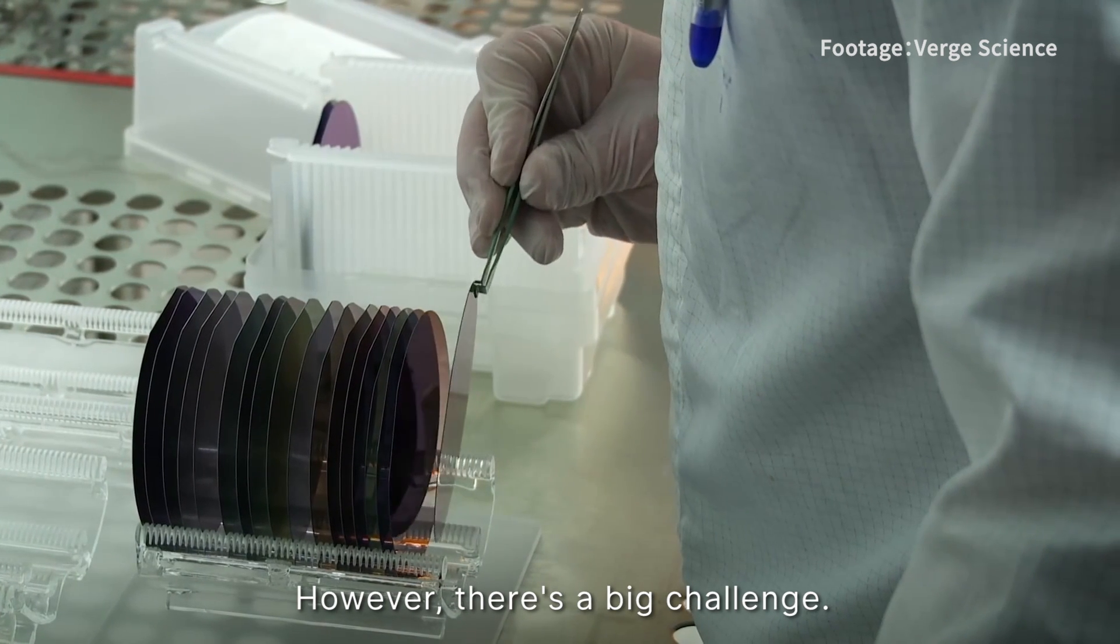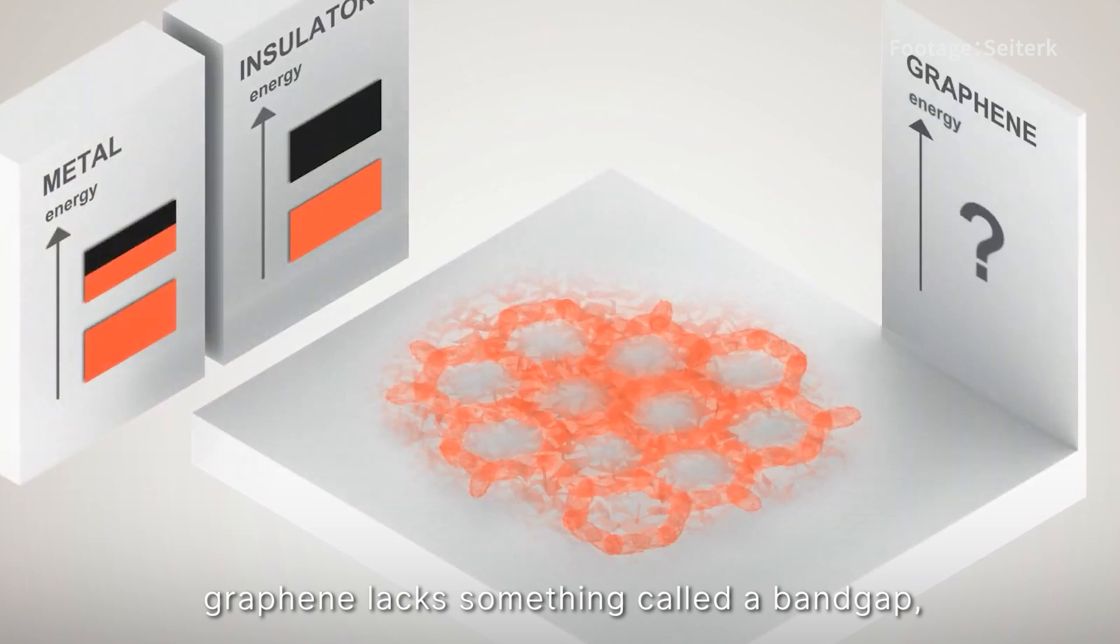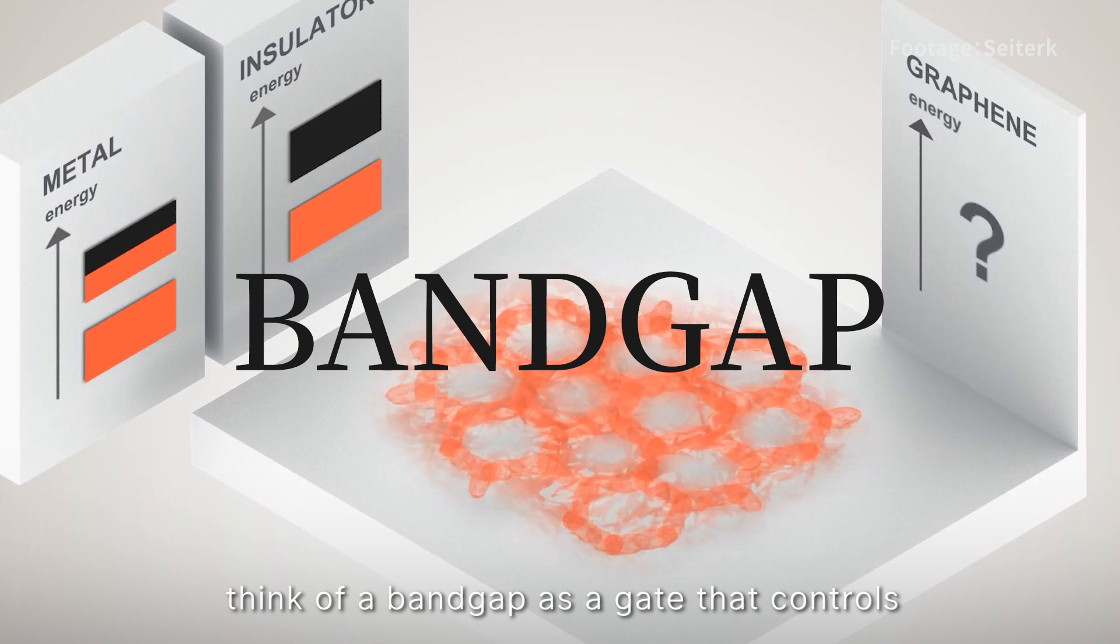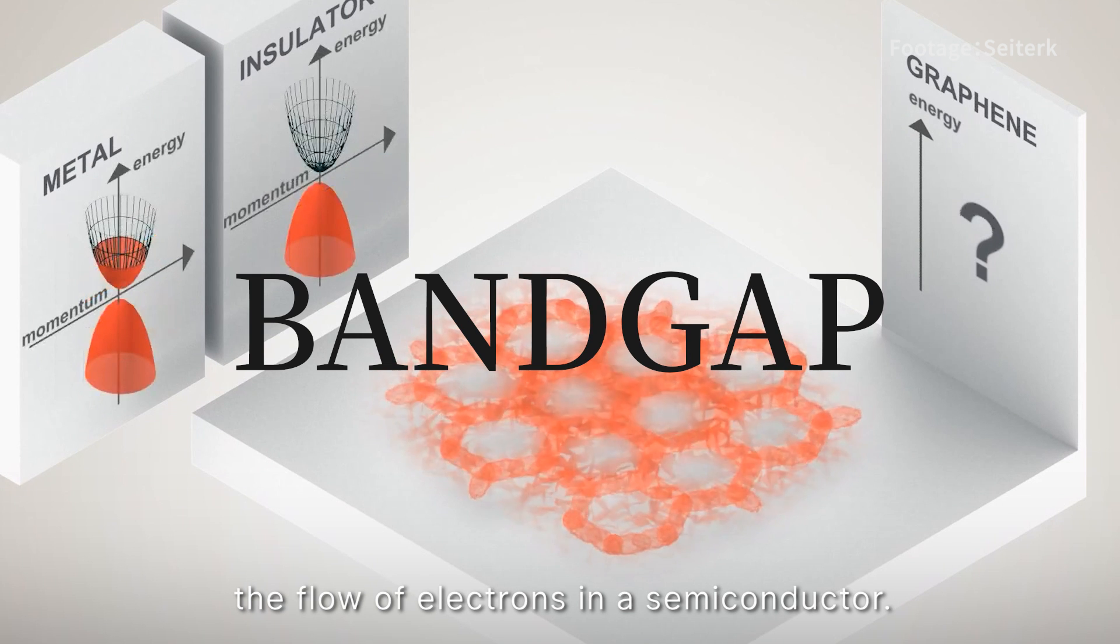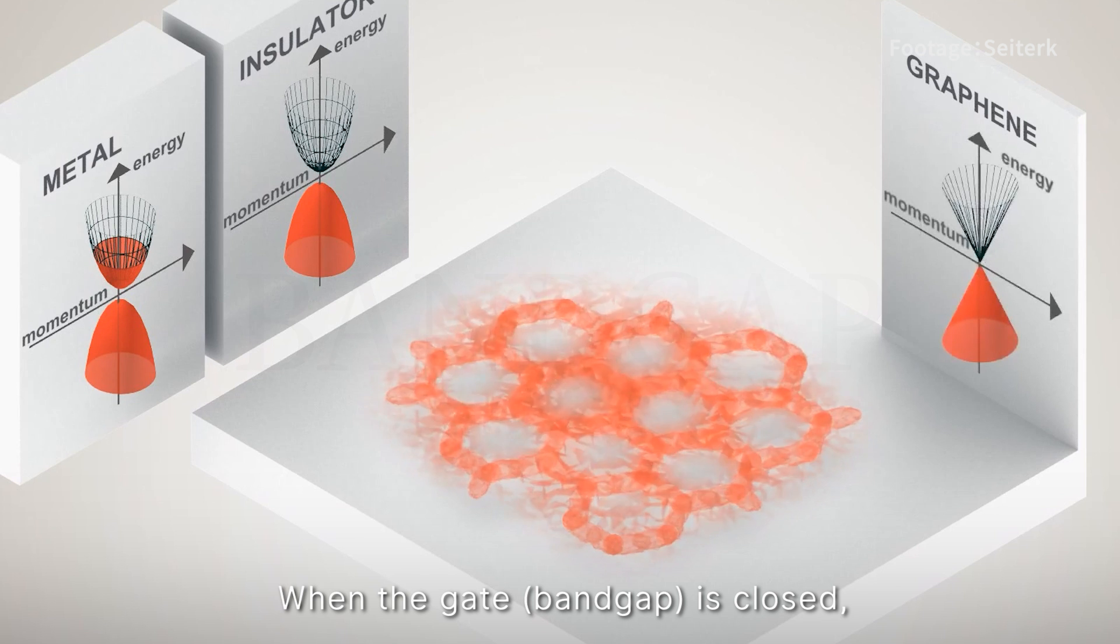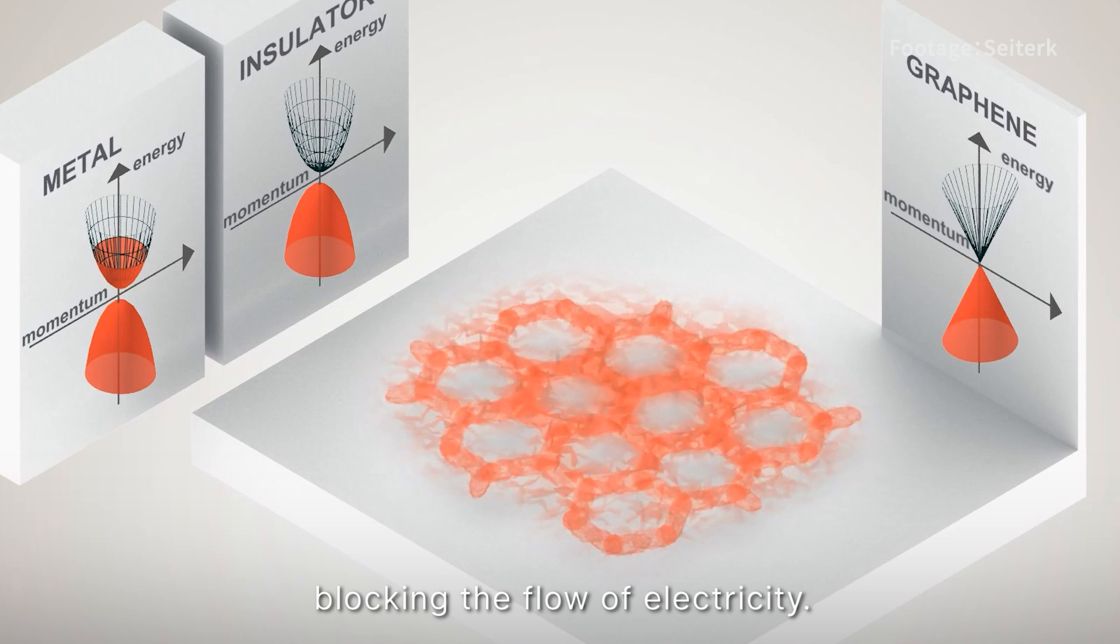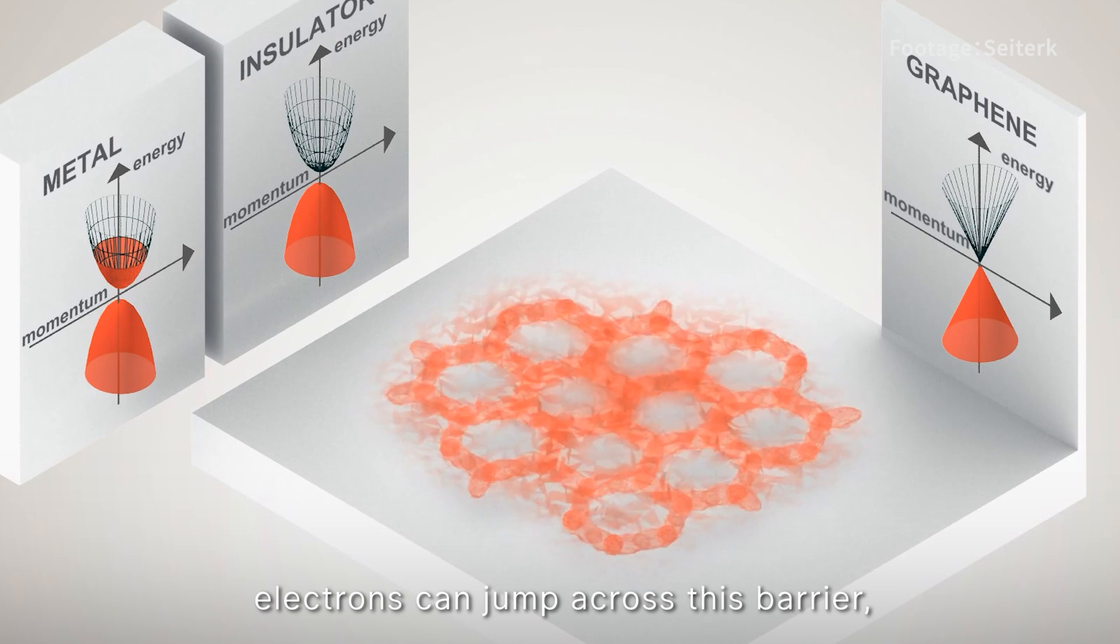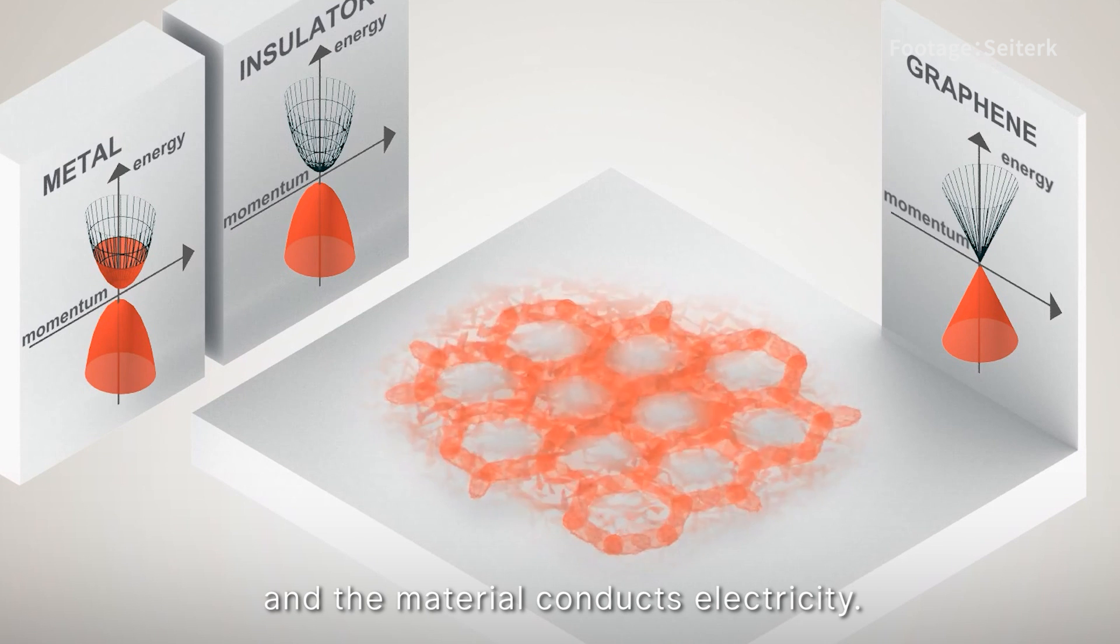However, there is a big challenge. Despite its remarkable conductivity, graphene lacks something called a band gap. Think of a band gap as a gate that controls the flow of electrons in a semiconductor. When the gate is closed, electrons cannot pass and the material acts as an insulator blocking the flow of electricity. When the gate opens, electrons can jump across the barrier and the material conducts electricity.